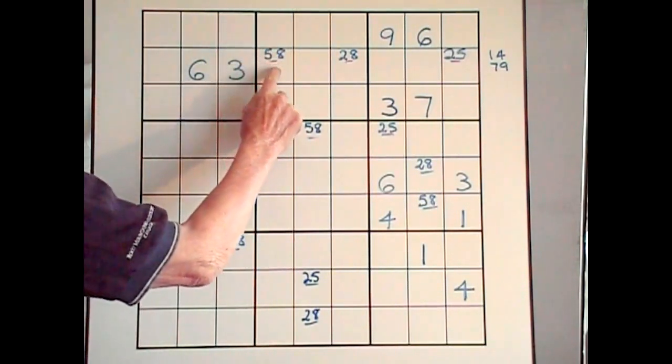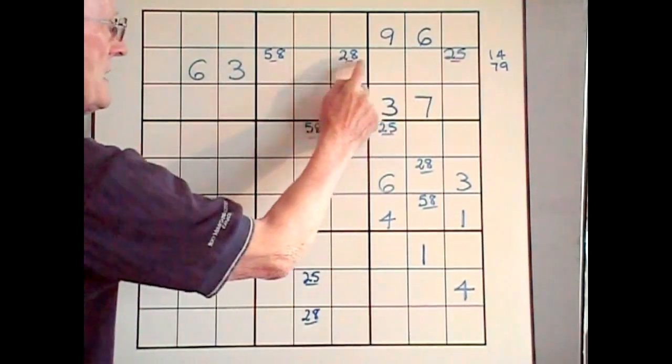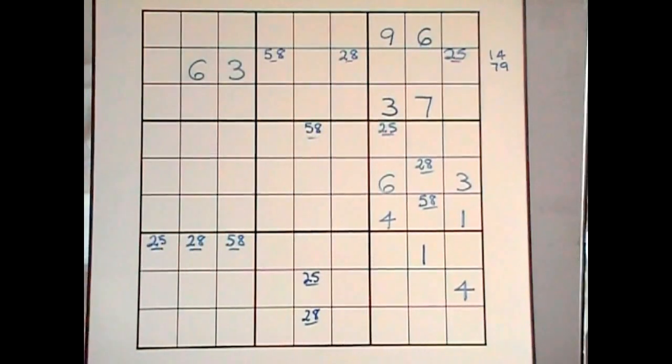In this row, we have a 5, 8, 2, 8, and a 2, 5. If you look at those 3 cells carefully, there's only 3 numbers involved. If there's only 3 numbers involved, that means that one of these is going to be 2, 5, or 8.